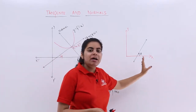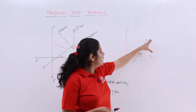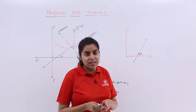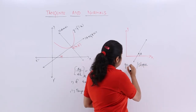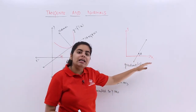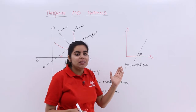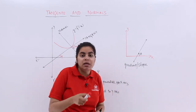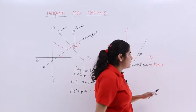Here we have a Cartesian plane. I have considered only the first quadrant, though you can always consider the whole Cartesian system. It has a line making an angle of θ in the anticlockwise direction with the x-axis. The gradient or slope of this line — which you started studying in class 11th — is the tan of that angle. So slope of the line is nothing but tan θ itself.